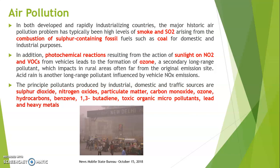If AQI is between 0 to 50, we consider it good. If it is 51 to 100, we say it is satisfactory. If 101 to 200, it is moderate. If 201 to 300, it is poor. If 301 to 400, it is very poor. And if it is greater than 401, it is very severe. Delhi was recorded to have AQI of 387 — in the category of very poor. Gurugram was 341, Ghaziabad 389, Faridabad 342 and Noida 375.